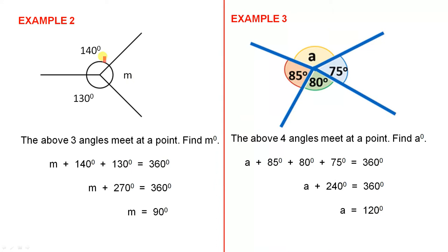Example 2. Here is a very similar situation. We have m, which is an unknown angle, 140 degrees and 130 degrees. The above three angles meet at a point. Find m. Now, following the rule from the previous slide, when we add the three angles together, we get 360.